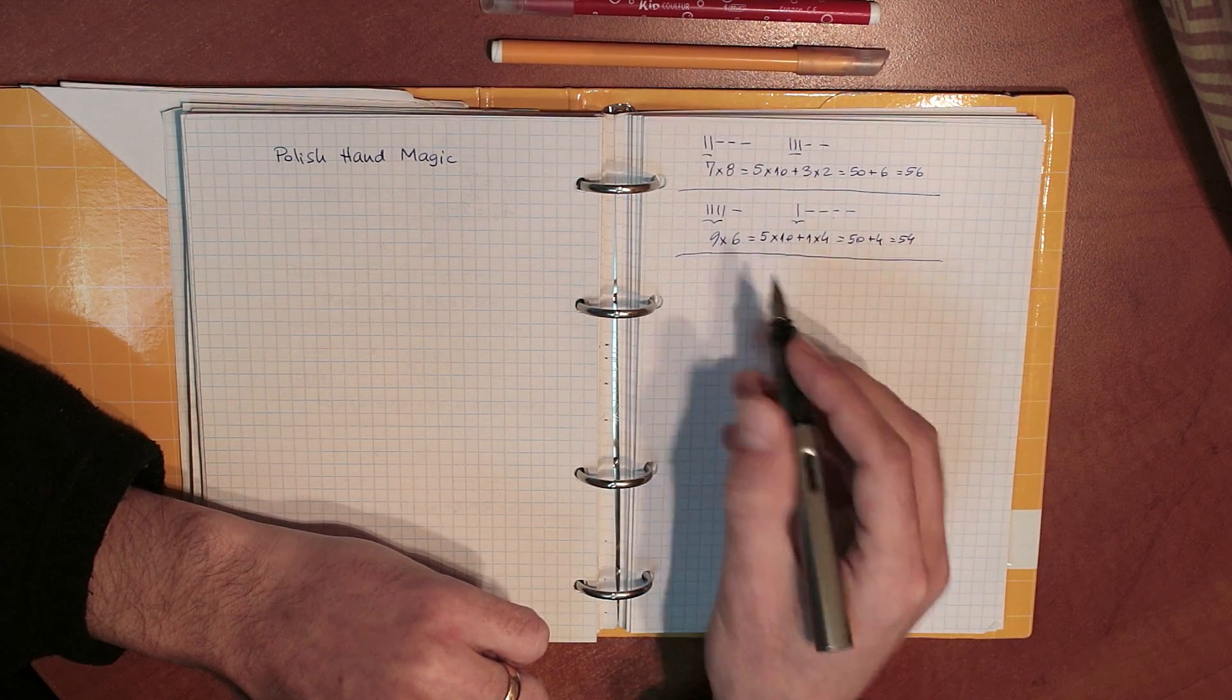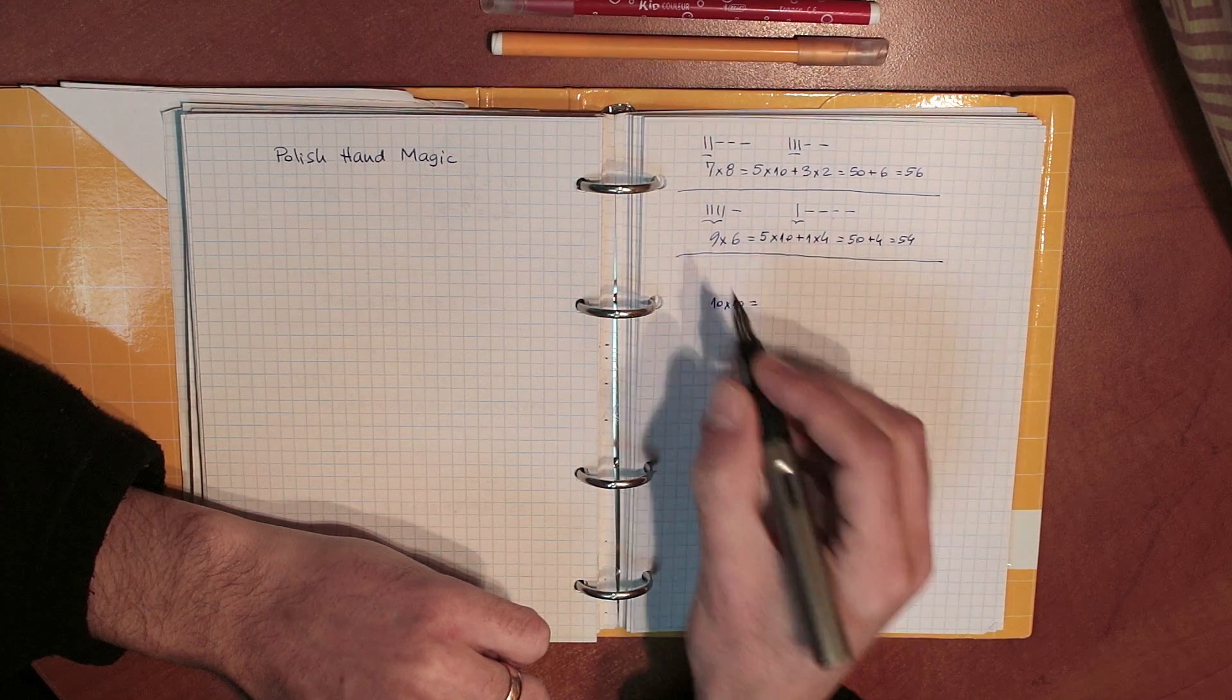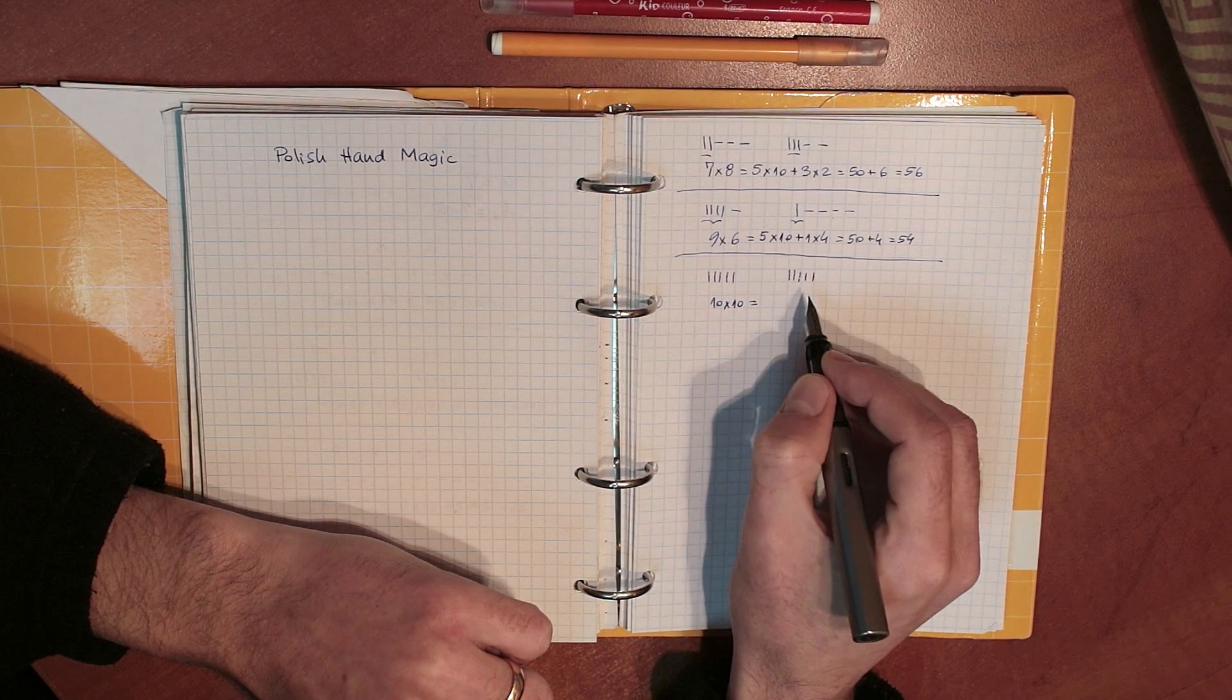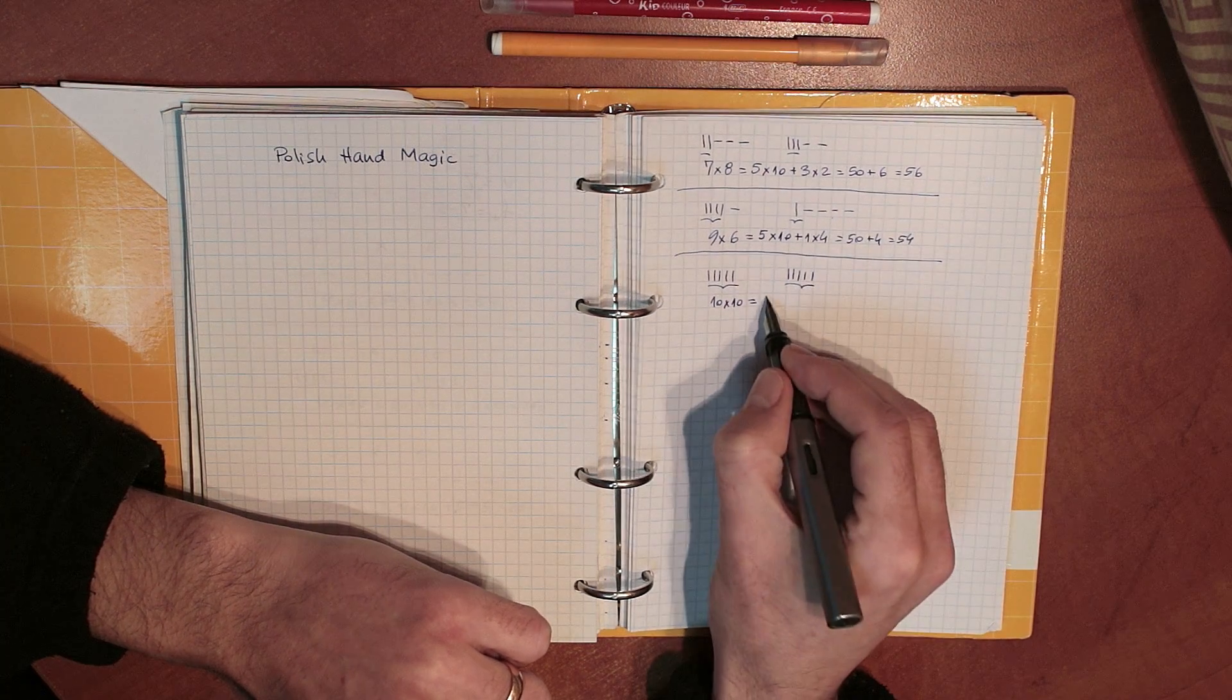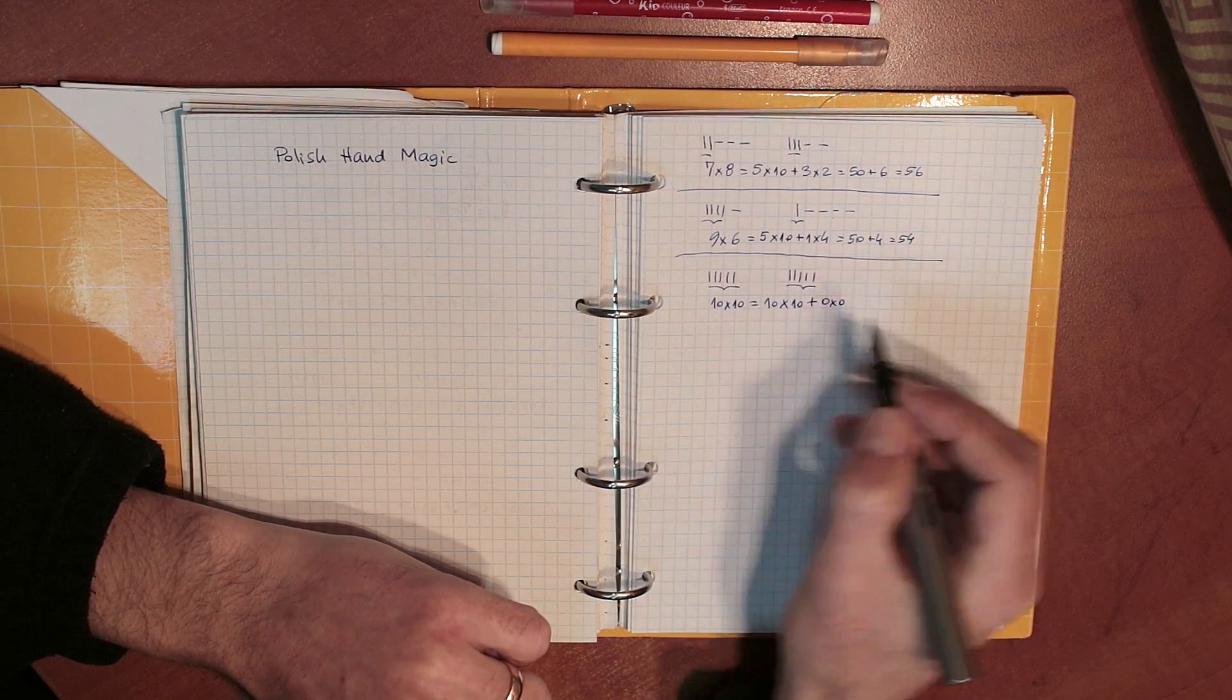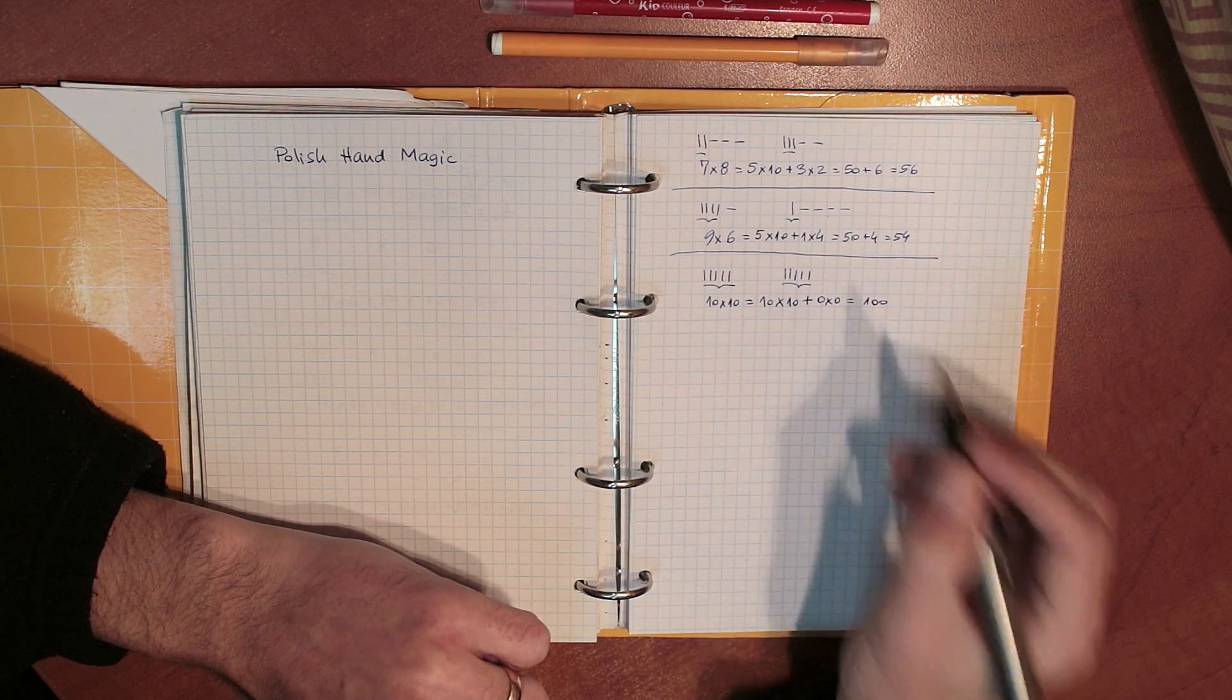Let's do a stranger one now. Let's do 10 times 10. For 10, I have to raise all of my fingers on my left hand, and again, all of my fingers on my right hand. I count the total number of raised fingers on my two hands, which is 10. I multiply that by 10. And then I add 0 times 0, because I have no lowered fingers on either hand. And then the result is again 100 correct.